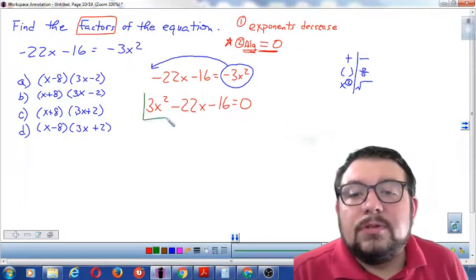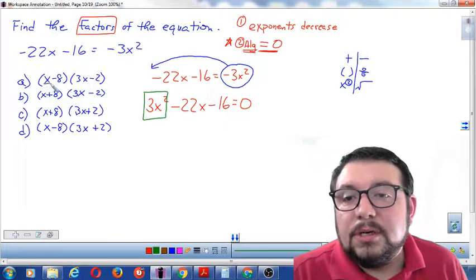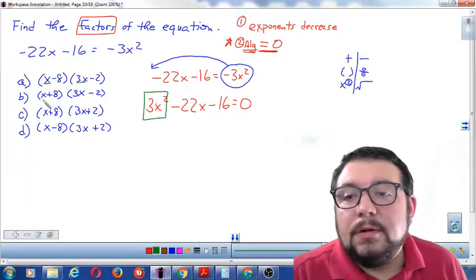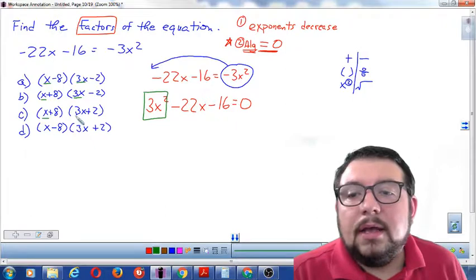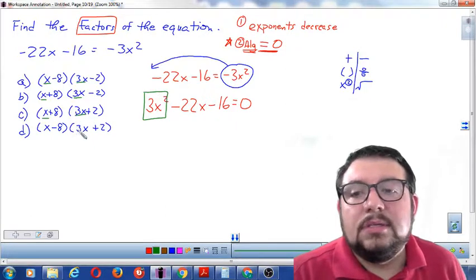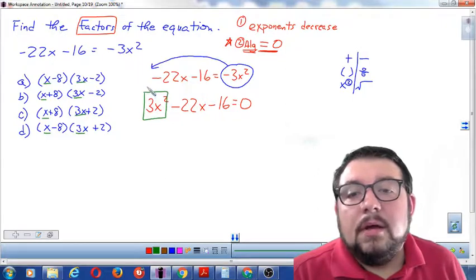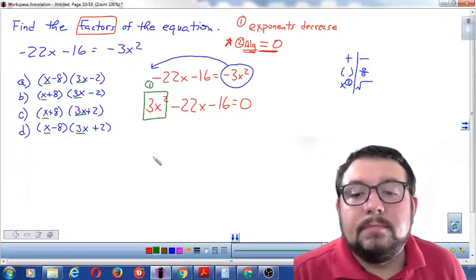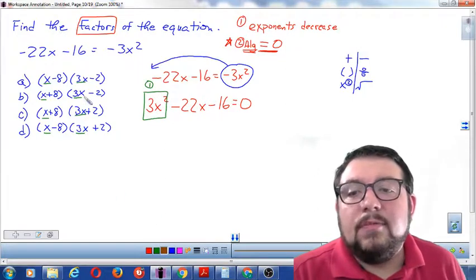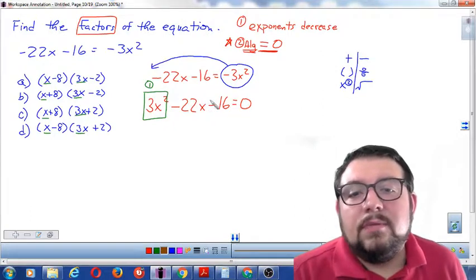First, I'm going to look at the first term. Looking at the first terms here—x and 3x—that would make 3x². So that matches. First, check the first term. We did that and didn't eliminate any choices, but we'll keep going.